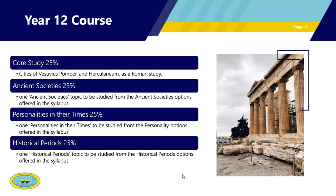The Year 12 course is more structured, with a different topic each term — four terms, four topics. The course study is Cities of Vesuvius: Pompeii and Herculaneum, which is the compulsory topic covered across all of New South Wales. You'll also study an ancient society — Spartan Society to the Battle of Leuctra — a city-state known for its warlike nature. The third topic is a personality: Hatshepsut, a female pharaoh who ruled for 22 years — a very significant individual in ancient history.